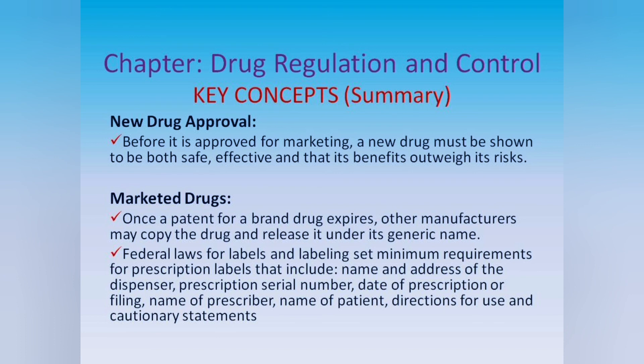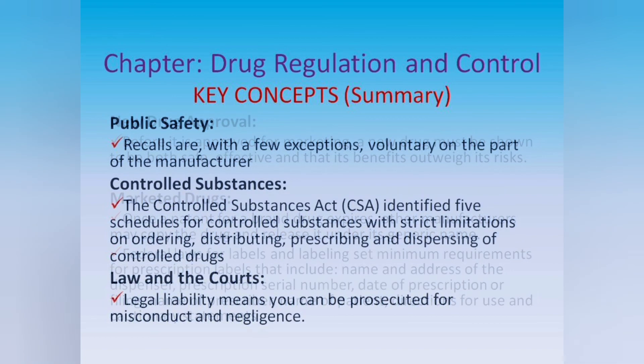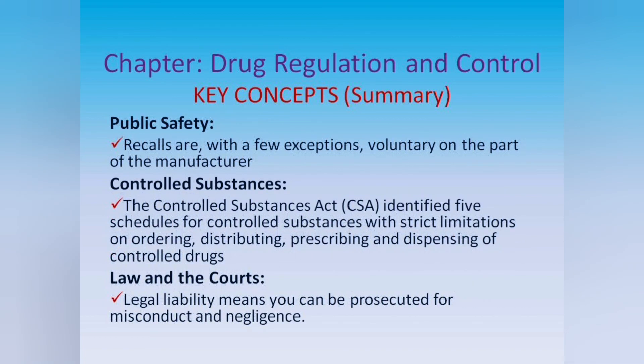Federal laws for labels and labeling set minimum requirements for prescription labels that include: name and address of the dispenser, prescription serial number, date of prescription or filing, name of prescriber, name of patient, directions for use, and cautionary statements. Public Safety: recalls are, with a few exceptions, voluntary on the part of the manufacturer. Controlled Substances: the Controlled Substances Act, or CSA, identified five schedules for controlled substances with strict limitations on ordering, distributing, prescribing, and dispensing of controlled drugs.